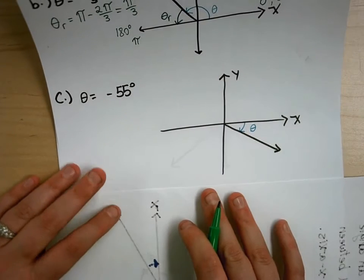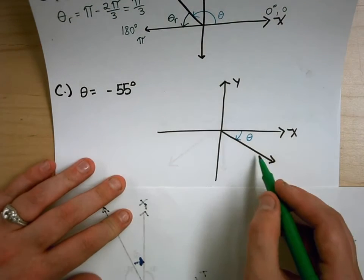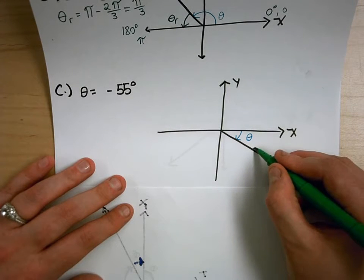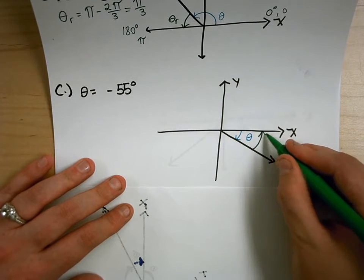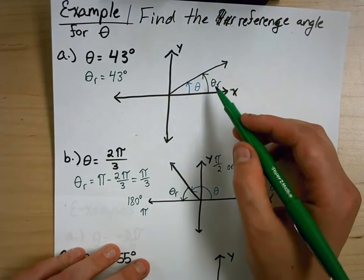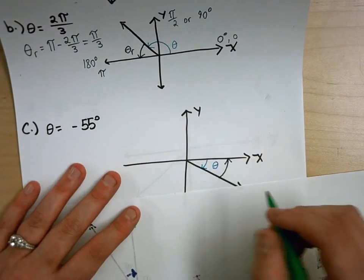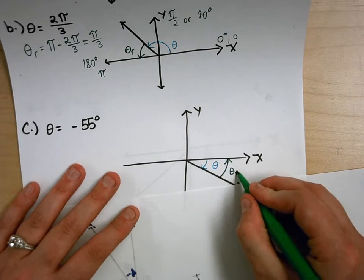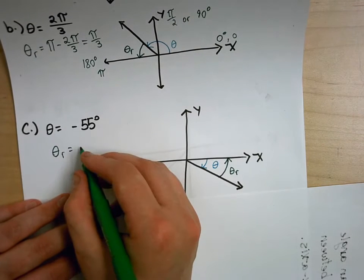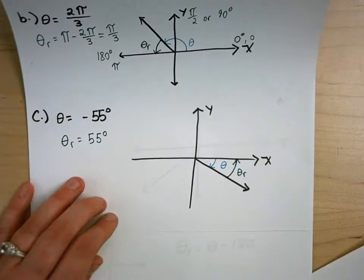For theta equals negative 55 degrees, here's the terminating side. I can create an acute angle from the terminating side to the x-axis, with the arrow going in the positive direction — as it did for all previous examples. So theta r is positive 55 degrees, because direction matters: the reference angle must be positive.